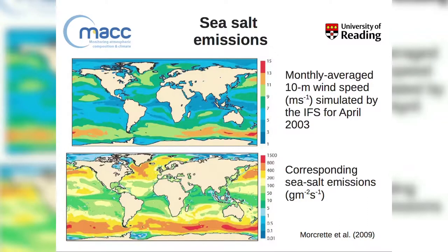The 10-meter wind speed is the main parameter used in these estimates. A distribution for April 2003 shows higher wind speeds at high latitudes — around the roaring 40s and 50s — and lower wind speeds in the tropics. Sea salt emissions follow a similar pattern, with strongest emissions in the Southern Ocean and the North Atlantic and Pacific.